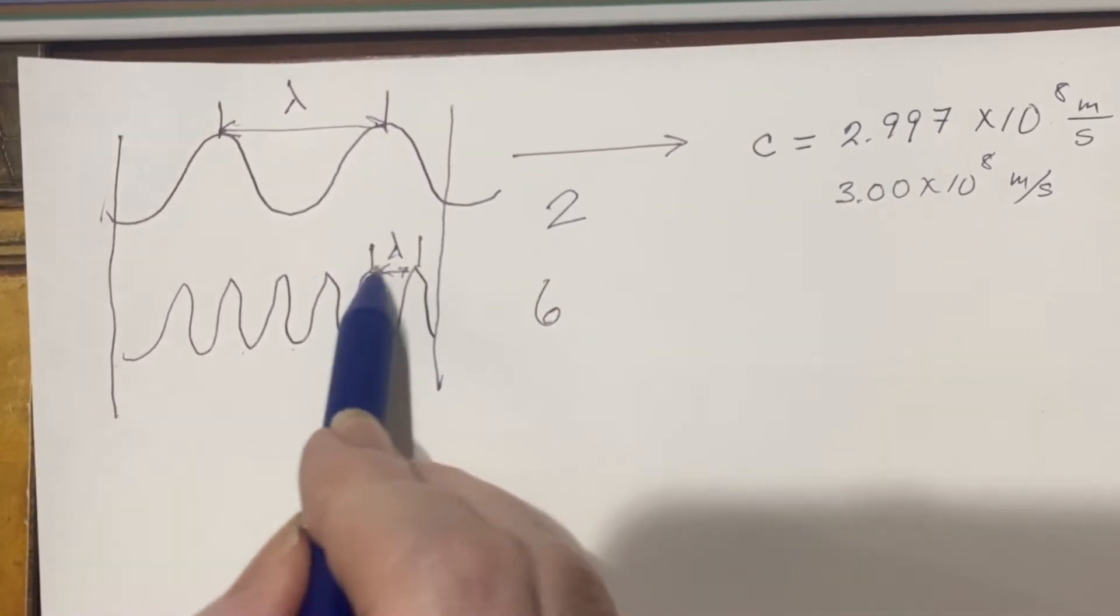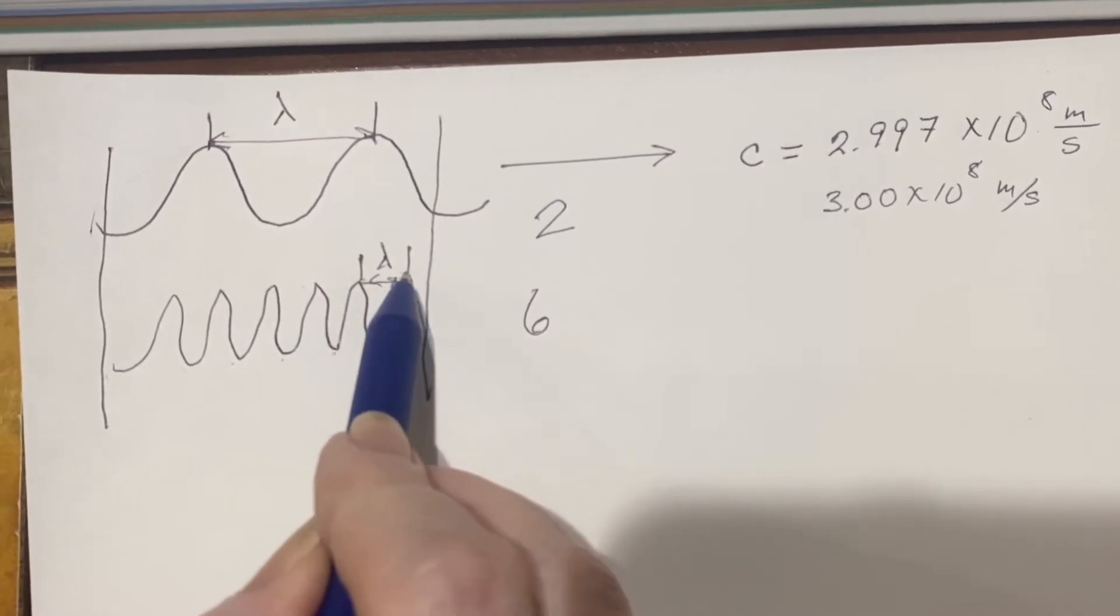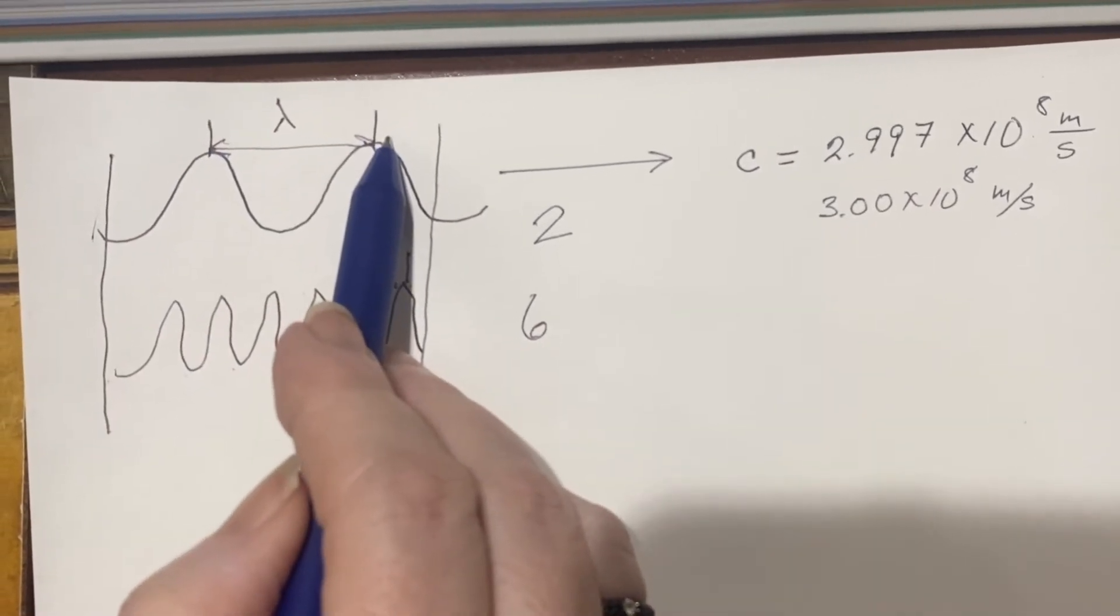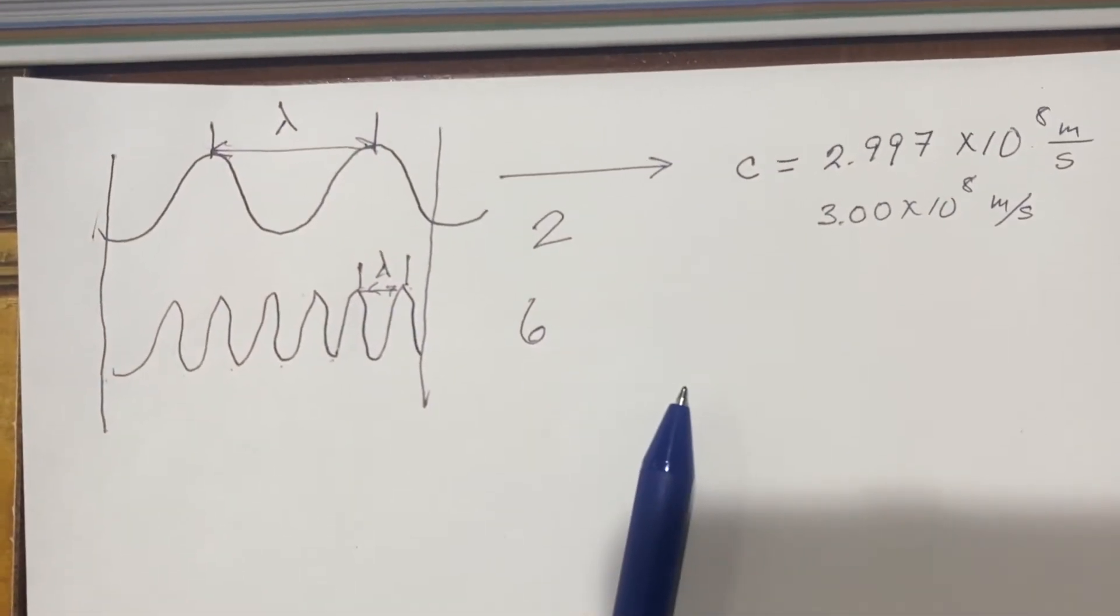And if you look, you see the wavelength here is one sixth of the wavelength there. Okay. So what can we do with that sort of information?